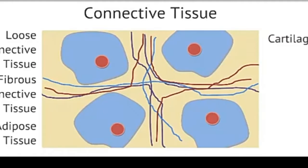Cartilage is a connective tissue with a rubbery extracellular matrix. Our outer ear and the end of our nose is made of cartilage. Cartilage can also be found between the bones of our vertebral column and at the ends of our bones at the joints. This cartilage is used as a physical shock absorber, as well as a way to reduce friction at movable joints.